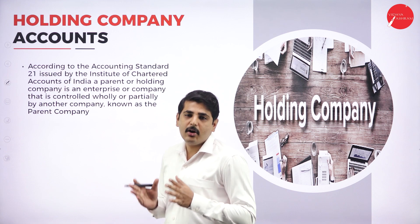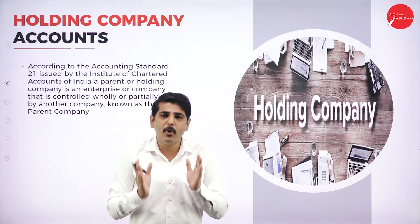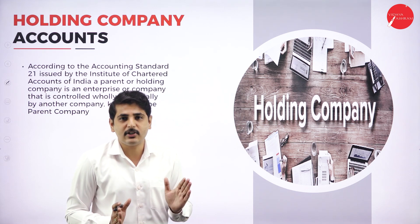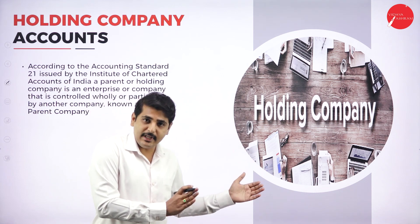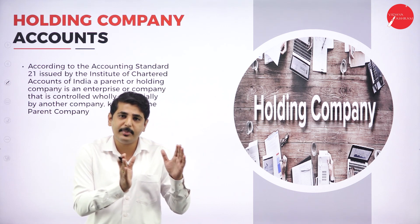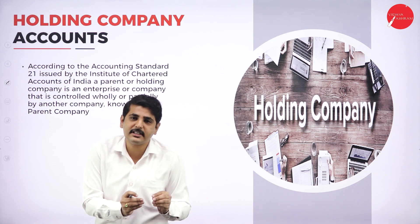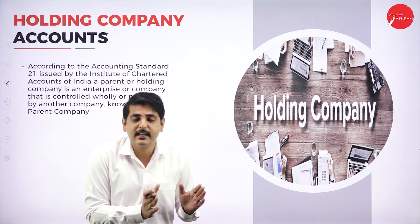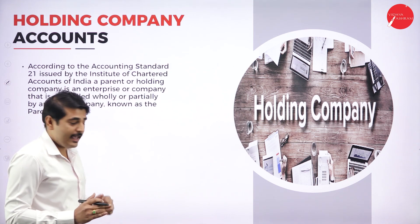A holding company is a company which acquires or which holds more than 50 percent of shares from another company — then it is called a holding company or parent company. The other company which sells shares to the holding company is left with minority shares or a very limited number of shares compared to the holding company, so it is called a subsidiary company or subordinate company.